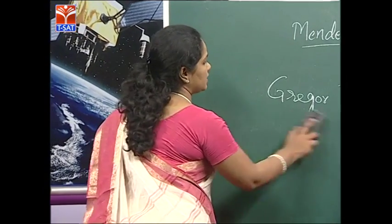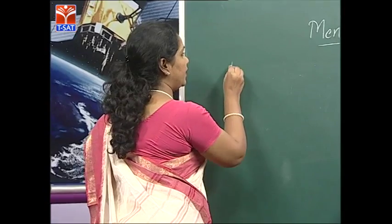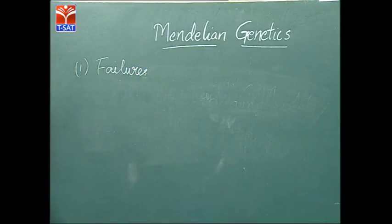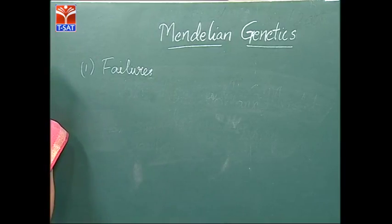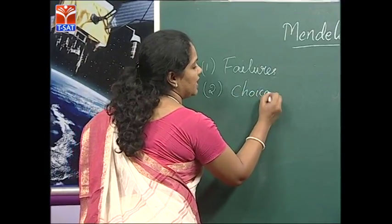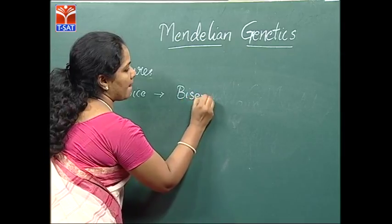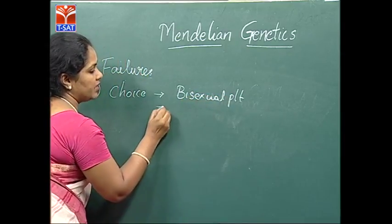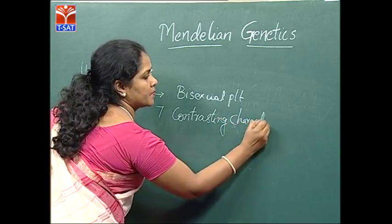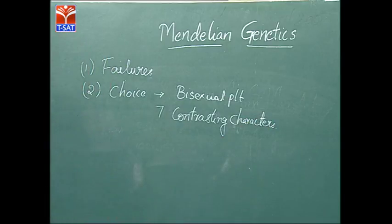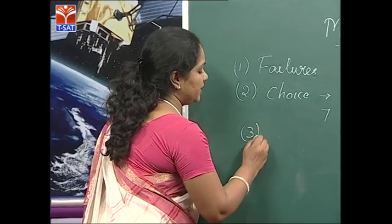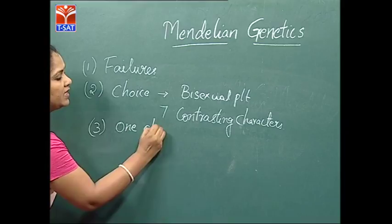Now we will see what are the reasons for the success of Gregor Johann Mendel. The first important point is that Mendel studied the failures of his predecessors. He systematically chalked out a plant hybridization program. Secondly, the choice of plant — he had taken a bisexual annual plant with seven contrasting characters. He also studied only one character at a time.